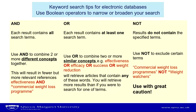For our example of commercial weight loss programs, we can link effectiveness and commercial weight loss program together using AND. OR means that we're instructing the database to find results that contain at least one of the search terms. We use OR to combine two or more similar concepts — so you would use OR to link all the synonyms you can think of together. For instance: effectiveness or efficiency or success or weight reduction. Using OR will retrieve articles containing any of these words, so you will retrieve more results this way.